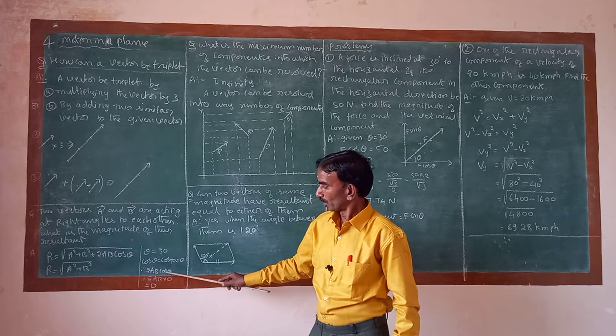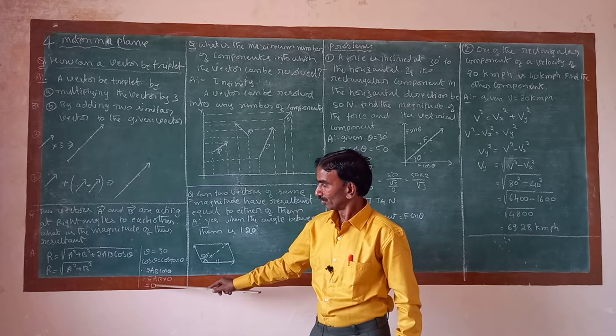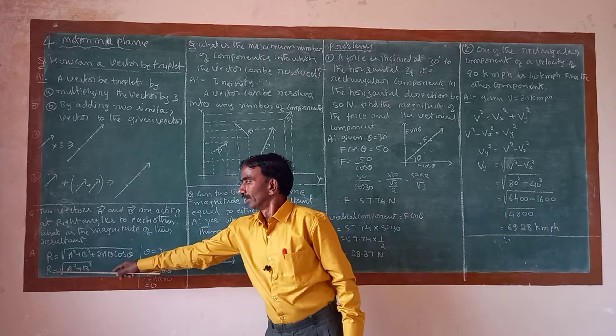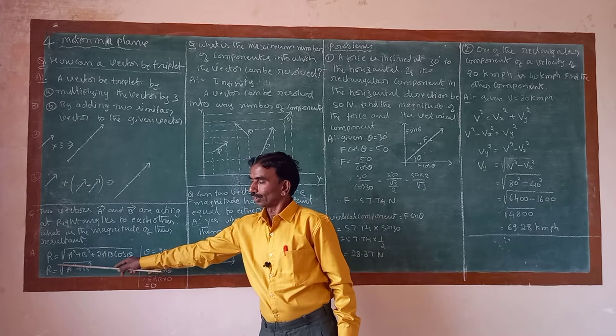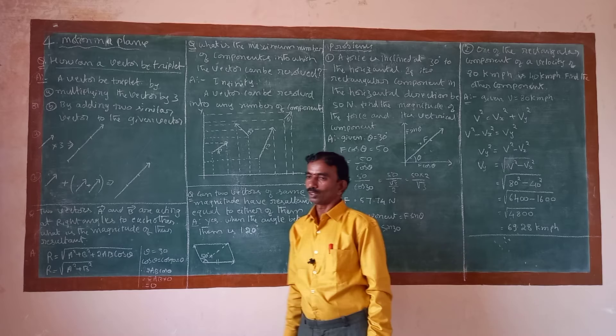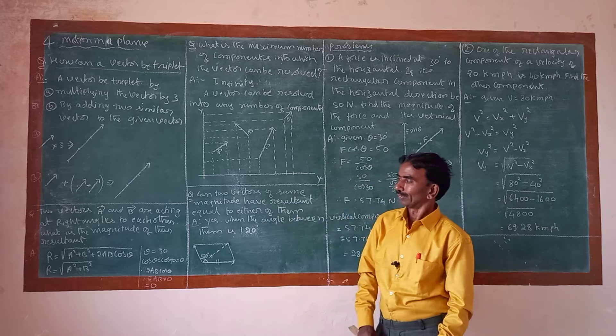So cos theta equals cos 90, which equals 0. Therefore 2AB cos theta equals 0. So the resultant R is equal to the square root of A squared plus B squared.